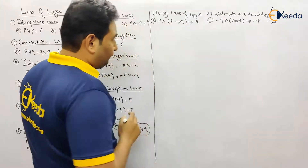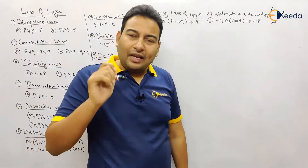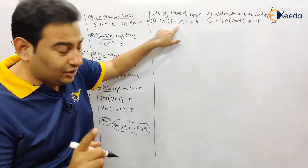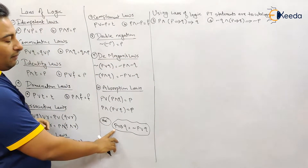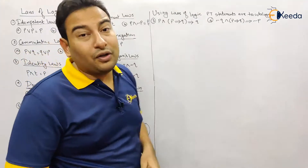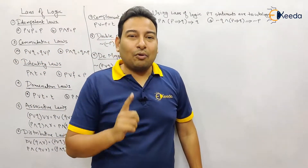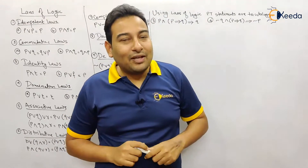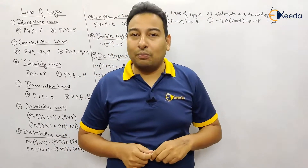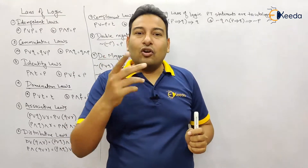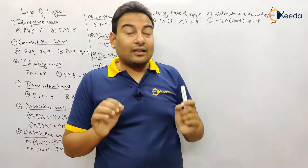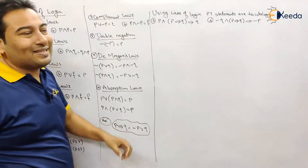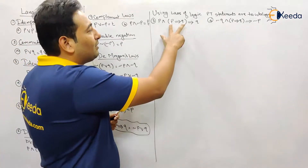Let's discuss problem number three. Whenever you get a problem, your first step should be to check whether there is an implication or not. If there is an implication, always replace p implies q with negation p or q. This is your first step. Also check for double implication — p double implies q — which expands to (negation p or q) and (negation q or p). Always check whether implication or equivalence is present, and replace accordingly.